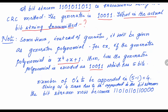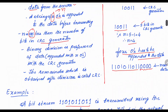To encode a generator polynomial such as x⁴ + x + 1: the highest degree is x⁴, then x³ and x² are missing so they become 0 0, then x gives 1 and the constant 1 gives 1. So the three present terms (x⁴, x, and 1) are denoted with 1s, and the missing ones with 0s, giving the 5-bit generator 1 0 0 1 1. With 5 bits, n = 4 zeros are appended to the data.